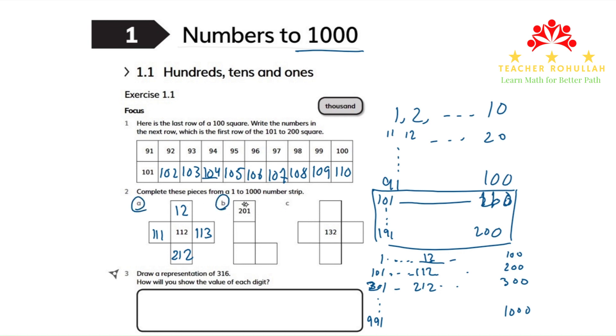In part B we have 201. 201 is here. This is 101, this is 201. Below 201 we have 301. Below 301 we have 401. So 201, 301, 401. To the right of 401 we have 402. So over here we have to write 402. That's nice.